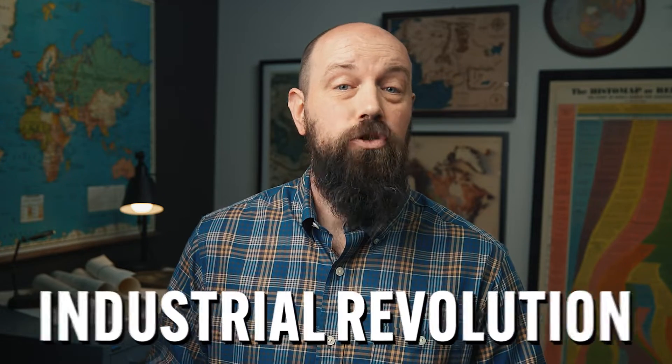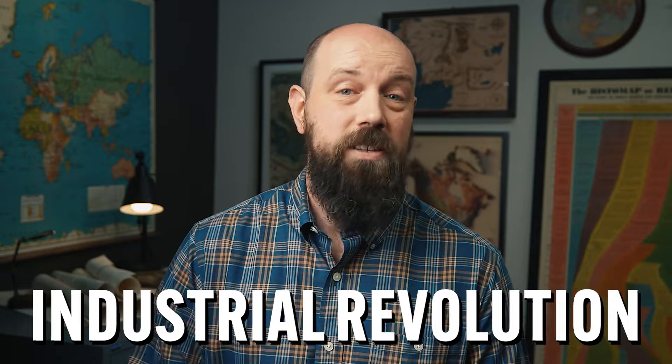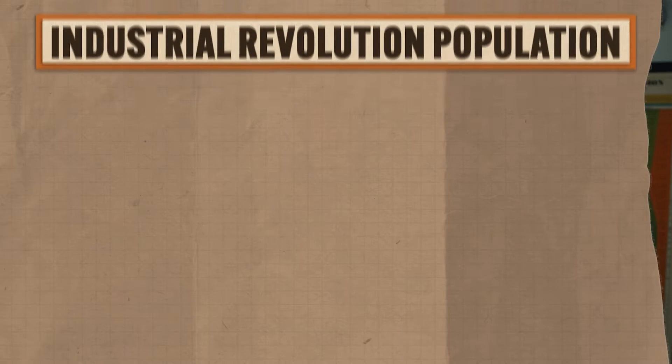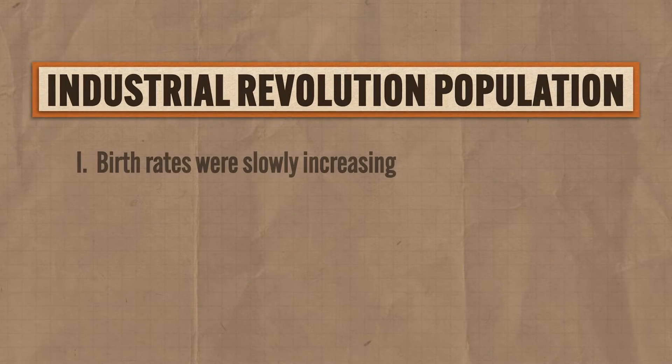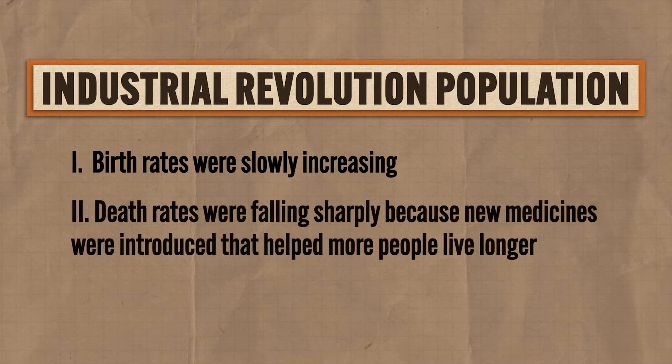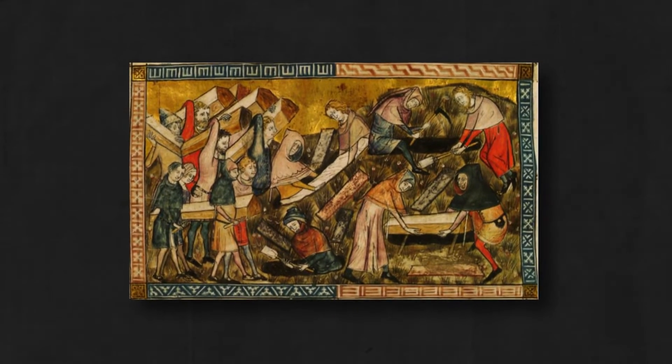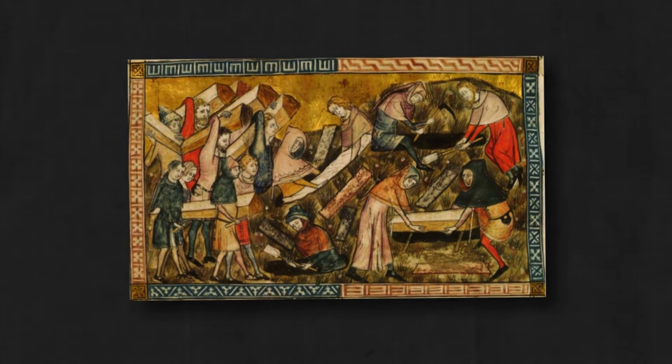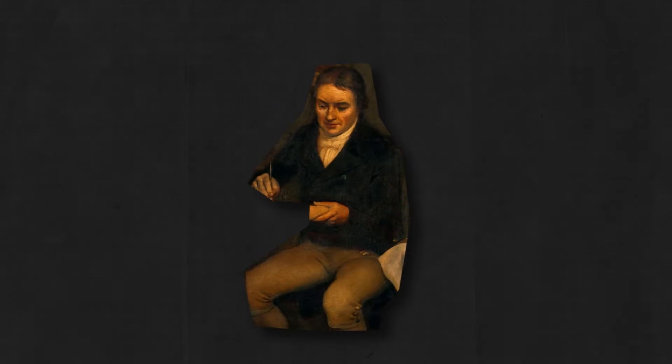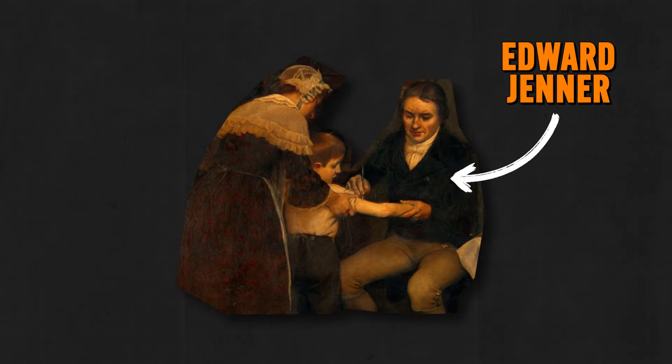Malthus lived right at the beginning of the industrial revolution. This revolution caused a massive explosion in population growth due to two factors. First, birth rates were slowly increasing. Second, death rates were falling sharply because new medicines were introduced that helped people live longer. It was during this time that the bubonic plague, which had killed large swathes of humanity in the preceding centuries, just sort of went away. Additionally, thanks to folks like Edward Jenner, vaccines were introduced, which took much of the sting out of pandemic diseases like smallpox, and that meant people were living longer. In other words, we're right about here on the demographic transition model — we're just tying things together and it feels good.